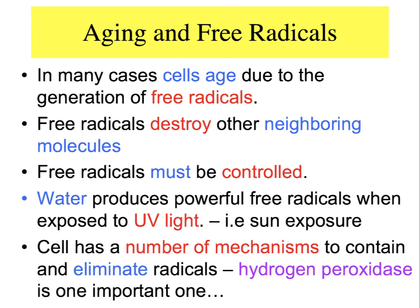Much research suggests that the formation of aberrant chemistry within cells can lead to mutations and other destructive outcomes. Free radicals are mischievous atoms or molecules which are missing their own electrons. They tend to sequester electrons from normal cellular chemistry, causing it to become defective. Free radicals must be controlled — otherwise, the destruction of normal chemistry within the cell can lead to cancer and many other outcomes. Water produces powerful free radicals when exposed to ultraviolet light, which happens during regular sun exposure.